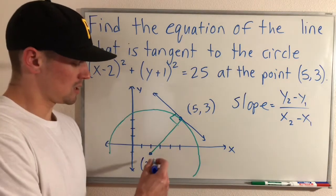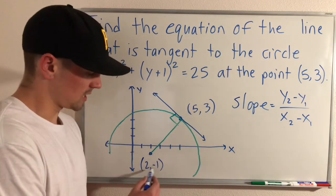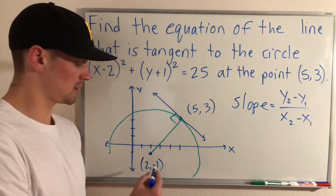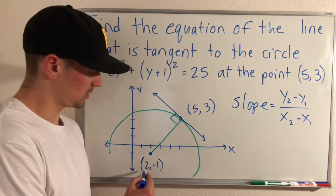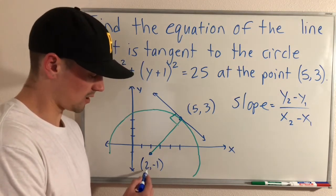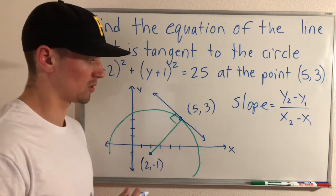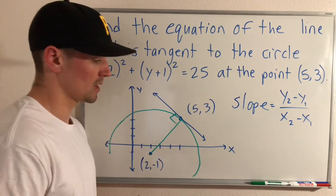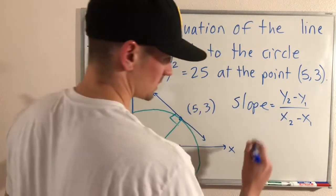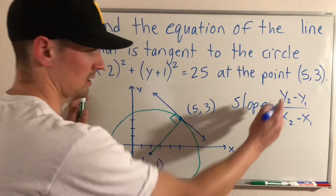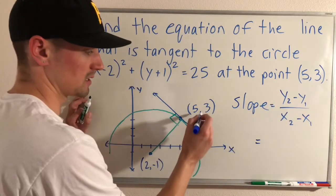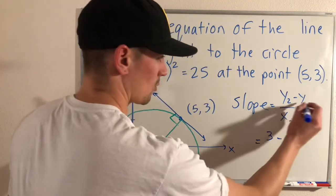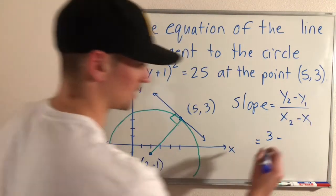So if we know (5, 3) and (2, -1) are two points that lie on this line, we could use, we'll say this point is our first point and this point is our second point. We can use the xy coordinates of those two points to figure out the slope of this line. So plugging those in into this equation here, we can get y₂ which we're saying this is our second point. So the y value of our second point which is 3 minus the y value of our first point which is -1.